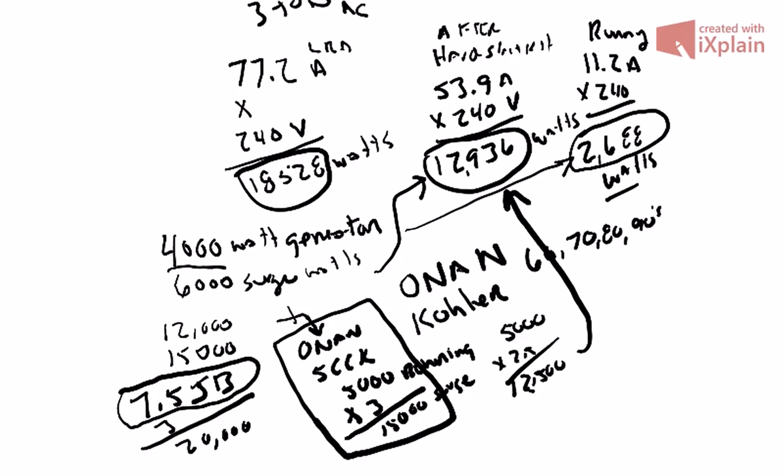You could also utilize load management and only start one thing at a time. And remember, once it's running, the wattage is a lot less. So if you look, I only need 2688 watts once that thing started and running. So if you had a 5000 watt generator, you would technically have some headroom. But the big issue is when these loads that require that have a motor that require a large amount of starting amperage, you want to have yourself some overhead.